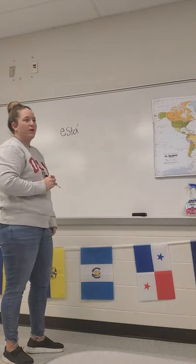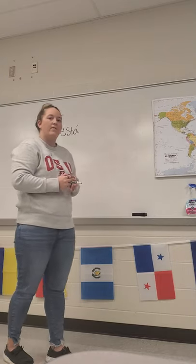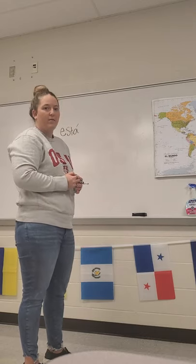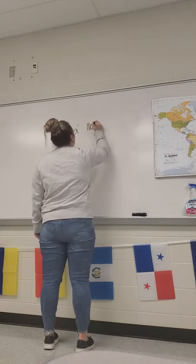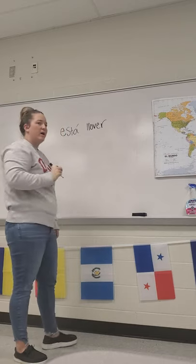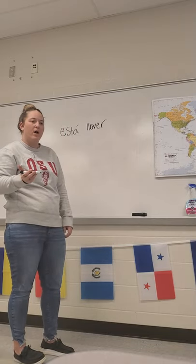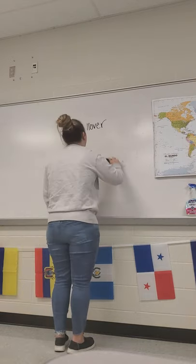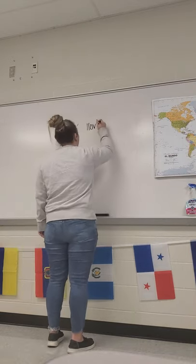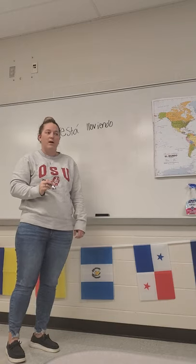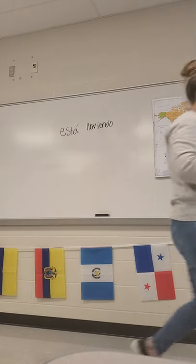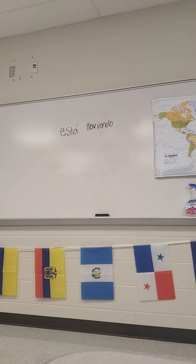We're just going to use any of the verbs you guys have. We'll go with llover, which means to rain. So we have llover — to change that and go with your -ing words, you take that -er away and add -iendo to the end: lloviendo. And that would translate to 'it is raining.'